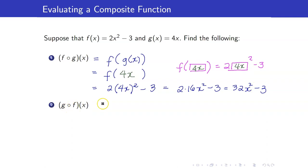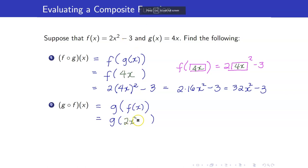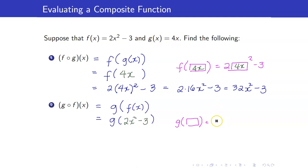Next, let's evaluate g circle f of x. This is g of f of x. I will replace f of x by 2x squared minus 3. Solving for g of 2x squared minus 3, I will write g of box as 4 times box, since g of x is equal to 4x.